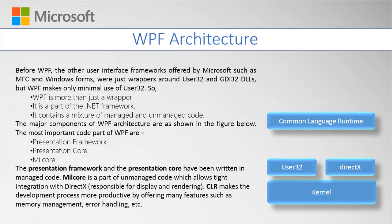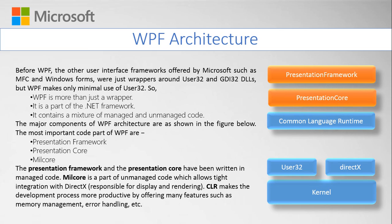In WPF, we have three most important parts. The Presentation Framework and Presentation Core are written in managed code. But to use unmanaged code and make communication between CLR and unmanaged code in the .NET architecture, we use a new component called MilCore. MilCore is a part of unmanaged code that allows tight integration between DirectX and CLR. CLR makes the development process more productive — such as memory management and error handling — which is the most important part of WPF. With these three new components, we can create WPF applications that are more effective and representative, and we can use templates to design custom controls.